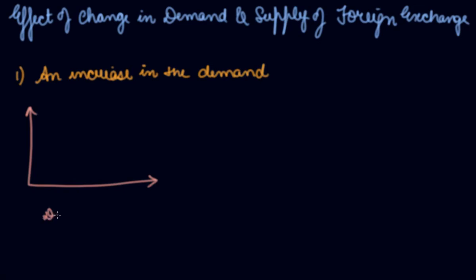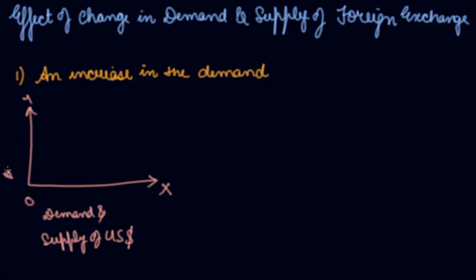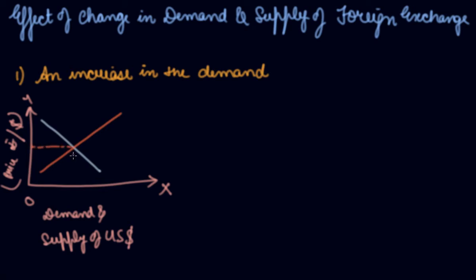We take the demand and supply of US dollar, and here you are taking the exchange rate — the rate of rupees upon US dollar — which means at what rate you can exchange your rupee to a dollar. This was the initial demand, this was the initial supply, and this was the rate of exchange and the quantity which was required.